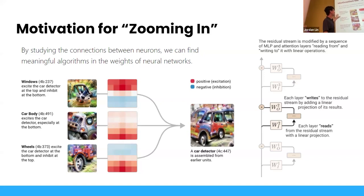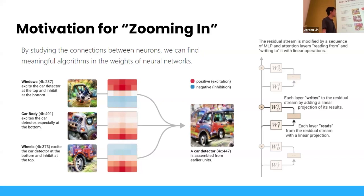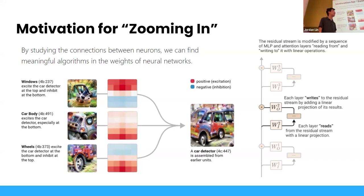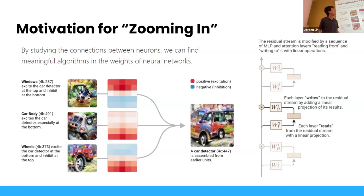Here's an example using a convolutional neural network. You can see filters that detect things like windows — this filter activates very strongly when it sees car windows or whiskers; this filter activates strongly when it sees car bodies; and this filter gets activated when it sees wheels. A linear combination of these filters leads to a whole car detector in the next layer.